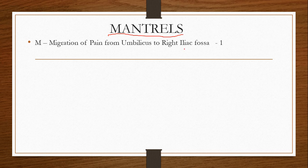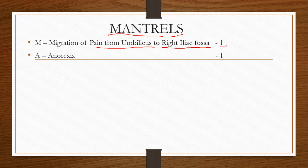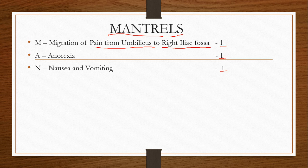M stands for migration of pain from the umbilicus to the right iliac fossa. At first, the pain is in the periumbilical region, and later it migrates toward the right iliac fossa or right lower quadrant of the abdomen — score is 1. A stands for anorexia, or loss of appetite — score is 1. N stands for nausea and vomiting — score is 1.